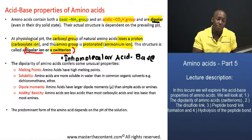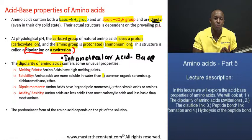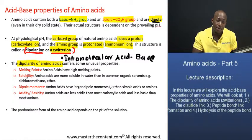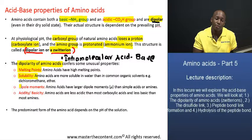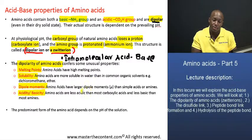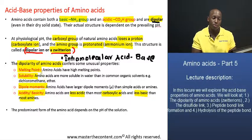This dipolarity that we observe in zwitterions — this dipolarity of amino acids — actually gives them some pretty unusual properties, some of which are listed on the screen. They tend to have very high melting points. They tend to be more soluble in water than in other organic solvents. And they also tend to have larger dipole moments than both simple acids or amines. As far as acidity and basicity is concerned, they tend to be less acidic than most carboxylic acids, and they tend to be less basic than most amines. All of those properties can somewhat be related to their dipolar nature.